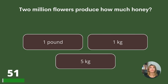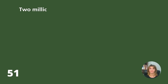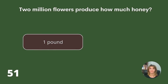Two million flowers produce how much honey? One pound, one kilo, or five kilos? Answer: One pound.